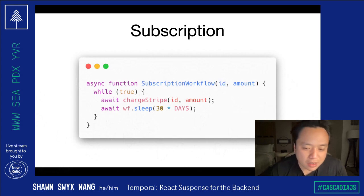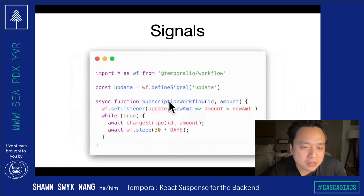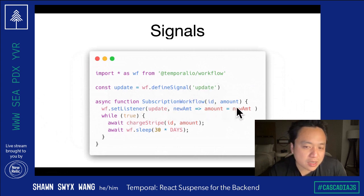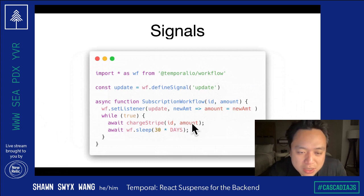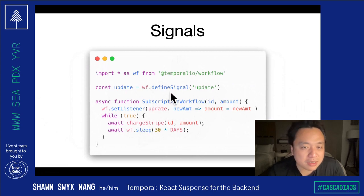You also want someone to be able to send information in while this thing is running, because we're working on a long-running process. So the final API I'm going to show is how to signal a workflow. Here we define a signal called an update signal, and whenever that update comes in to update the amounts, we can upgrade the amount being charged every single month. That's a very interesting and simple system to code fairly long-running processes, and you can apply that to a lot of different things.